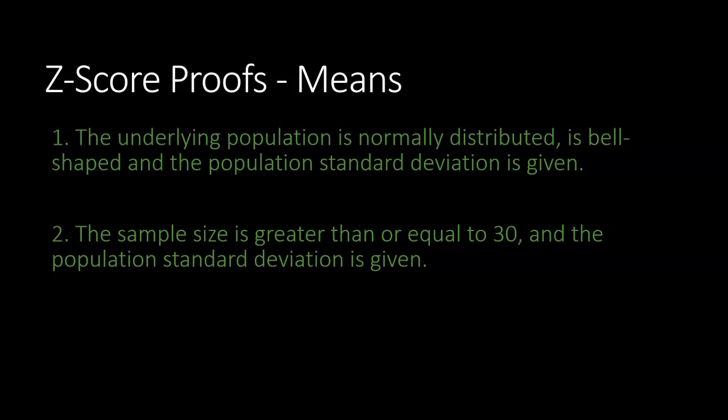If neither one of these are true, then we have to just look at the sample size. If the sample size is greater than 100, we can use a z-score. For one and two, we need the population standard deviation. We need sigma to be given to us. But number three, we just need a large enough sample. If it's greater than 100, then we can use a z-score.